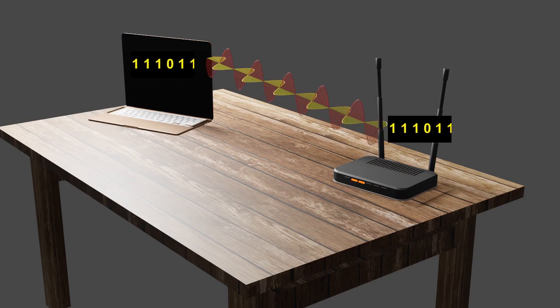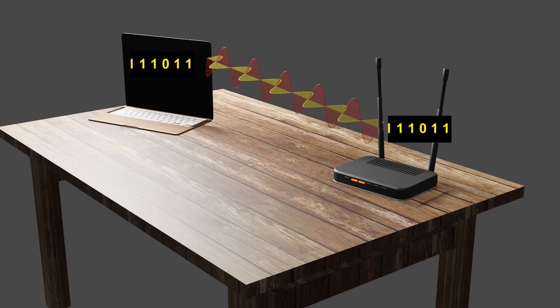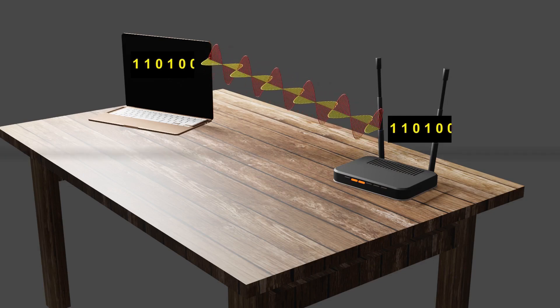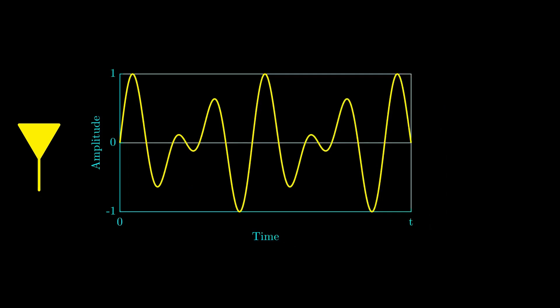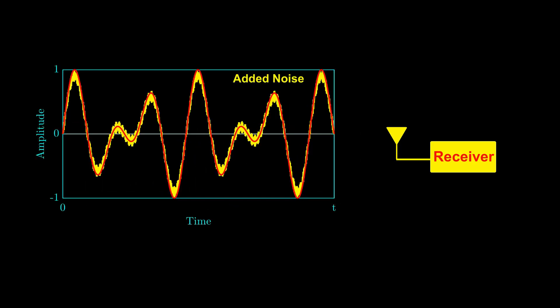Nearly all modern wireless communication devices process information in digital form, having only ones or zeros, and there is a good reason for this. Digital signals make communication more efficient and robust against noise. Imagine an analog signal traveling through the atmosphere to a receiver — along the way it gets attenuated and accumulates atmospheric noise, distorting the original waveform and making it difficult to recover.